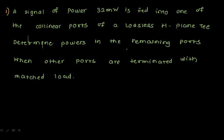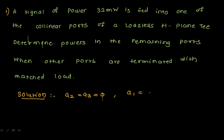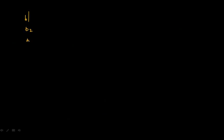We'll list out what is given for the H-plane T, then discuss the scattering matrix of the H-plane T, and then solve the problem. In the solution, A2 is equal to A3. Let us assume that A1 has been given 32 milliwatts of power. For the scattering matrix of the H-plane T, B equals scattering matrix into the inputs. Here B1, B2, B3 are the outputs as per our definition.